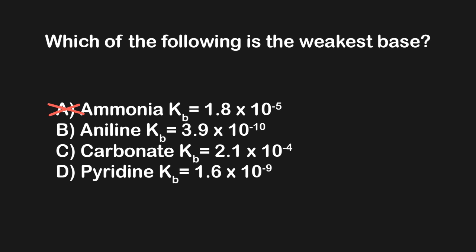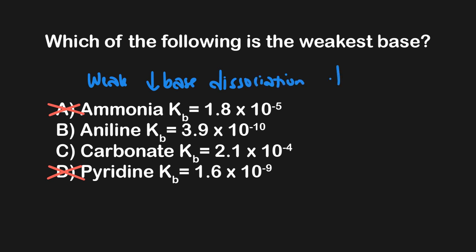Comparing aniline (Kb = 3.9 × 10⁻¹⁰) and pyridine (Kb = 1.6 × 10⁻⁹), pyridine is a little bigger than aniline, making pyridine intermediate and aniline the smallest overall. Now, are we looking for the smallest or biggest Kb value? We're looking for the weakest base — and a weak base has a low amount of base dissociation. Since Kb describes base dissociation, we want the smallest Kb value. Answer choice B is correct since it has the smallest Kb value, while choice C would describe the strongest base.